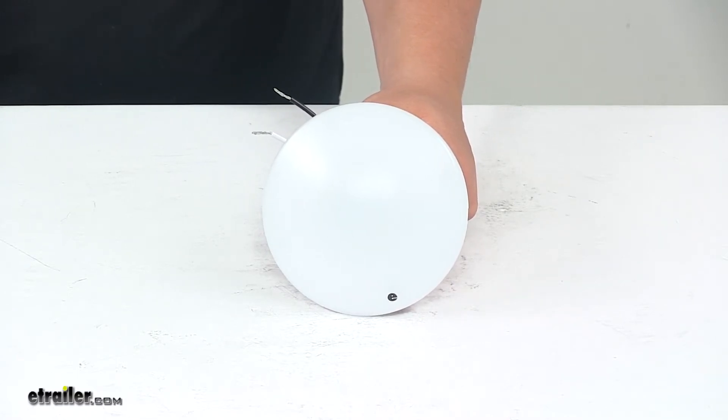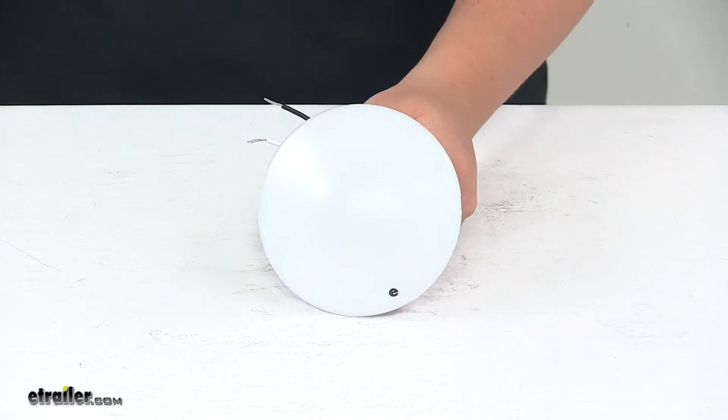Today we're taking a look at an LED RV interior light. The white ceiling or under cabinet light provides light for your trailer's interior.